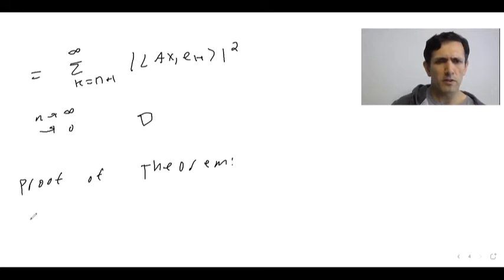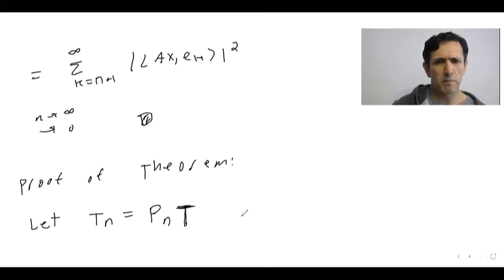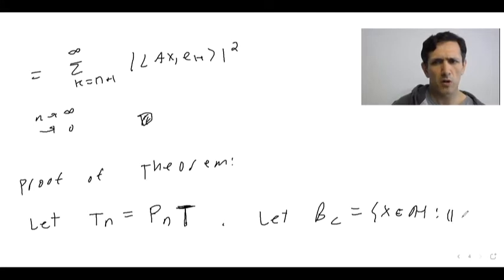So the proof of the theorem is as follows. Let TN be PN composed with T, just like before in this little lemma. Using the book's notation, let BC be the closed unit ball in H, the Hilbert space norm, so the closed unit ball with norm less than or equal to one.